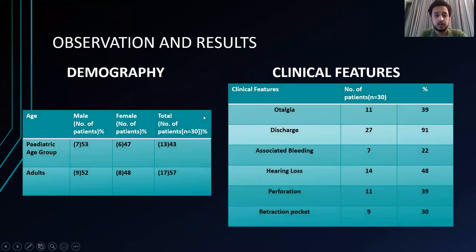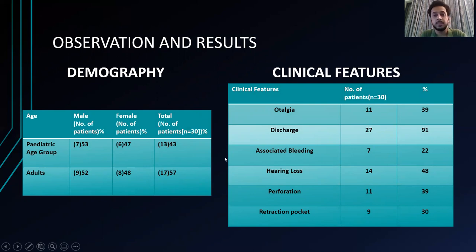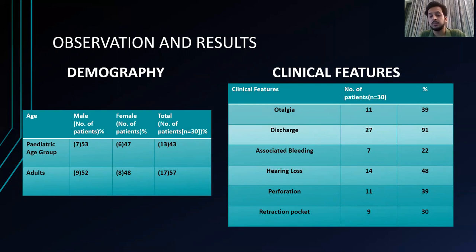For observations and results: the demographics showed 13 patients were in the pediatric age group and 17 patients were adults. Among the 13 pediatric patients, 7 were male and 6 were female. Out of the 17 adults, 9 were male and 8 were female. The clinical features were: 39% had otalgia, 91% had discharge, 22% had associated bleeding, 48% had hearing loss, 39% had perforation, and 30% had retraction pockets on otoscopy examination.